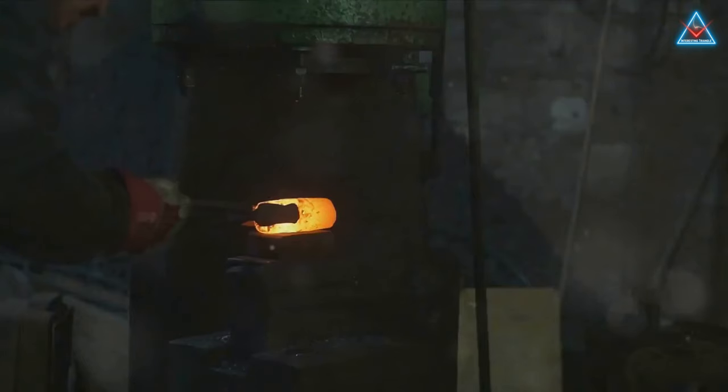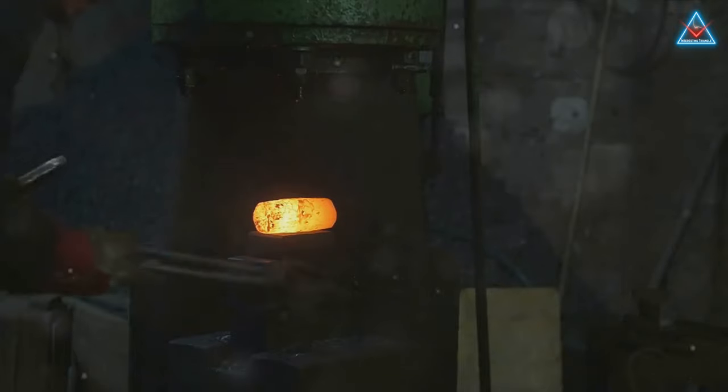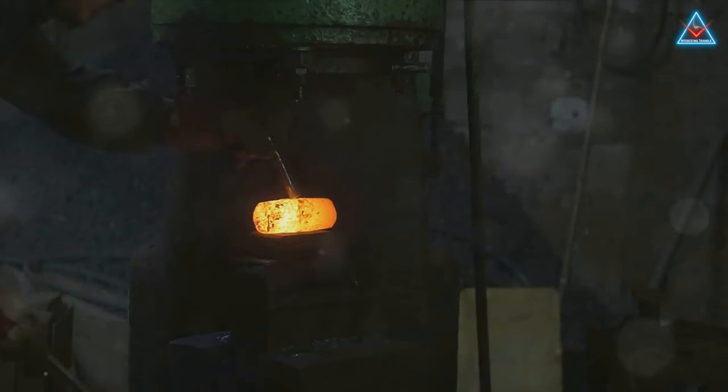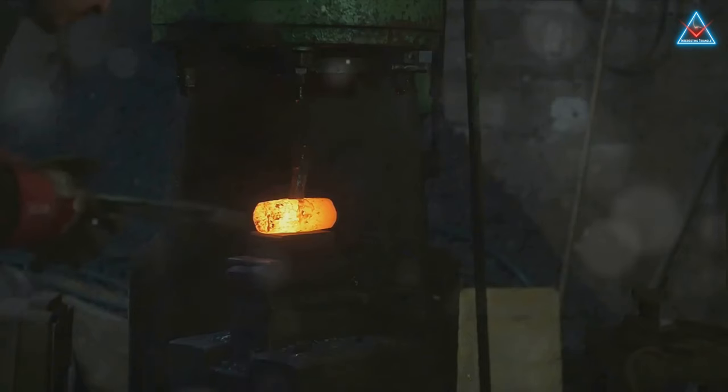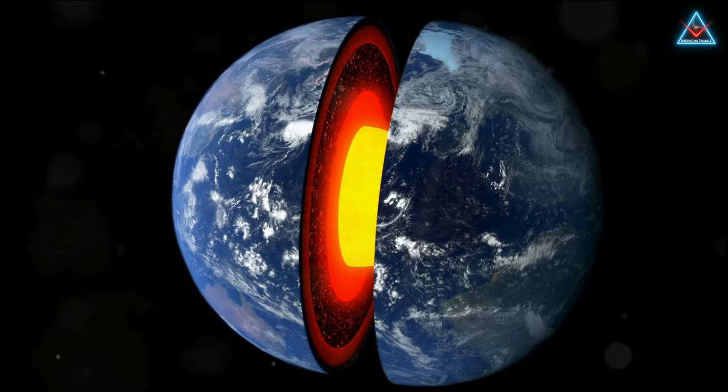This is the outer core, a region nearly as wide as two Mars planets put together. Its molten state allows it to churn and flow, a ceaseless dance of liquid metal under immense heat and pressure.